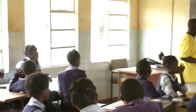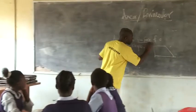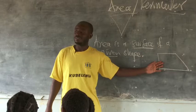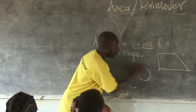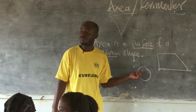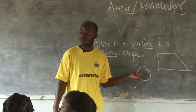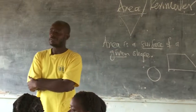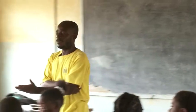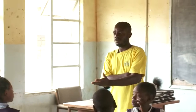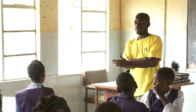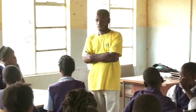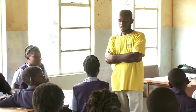You have just told me that area is the surface of a given shape. Yes. And I've given you this shape — what about this? It's also area. Why? Because there's a surface.